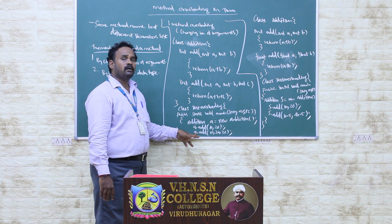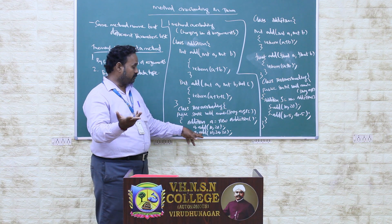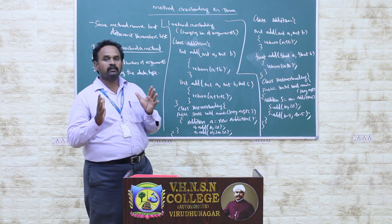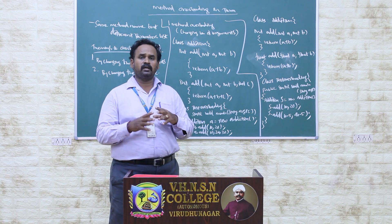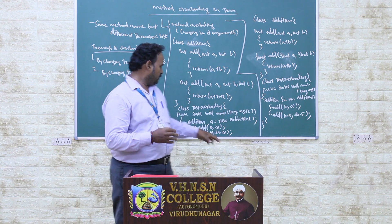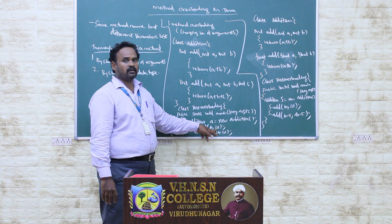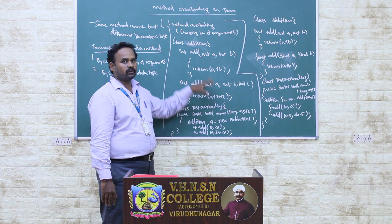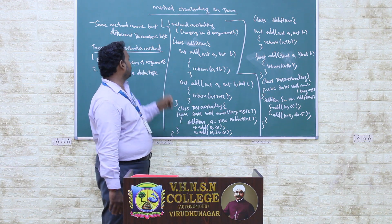Next, we are calling the other method using the object. Same method name, but with three parameter values. So, what is method overloading? Same method name but different parameters. Based on the parameter list, the corresponding method will be called automatically. When we pass two parameters, the two-parameter method is called. When we pass three parameters, that method is called automatically. This is method overloading by changing the number of arguments.